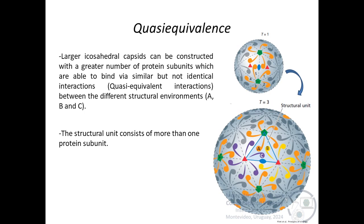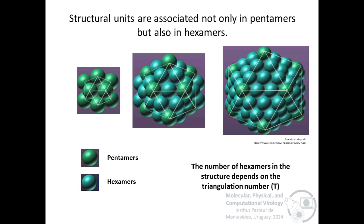In larger capsids, the structural units consist of more than one protein subunit. These structural units are associated not only in pentamers but also in hexamers. In the smallest structure, five subunits make five symmetrical contacts at each of the 12 vertices called pentamers. But in a larger assembly, for example with 180 subunits, this arrangement is retained in the 12 vertices but the additional 120 subunits form clusters with sixfold symmetry called hexamers. So capsids with 180 subunits have 12 pentamers and 20 hexamers. The number of hexamers in the structure depends on the triangulation number.